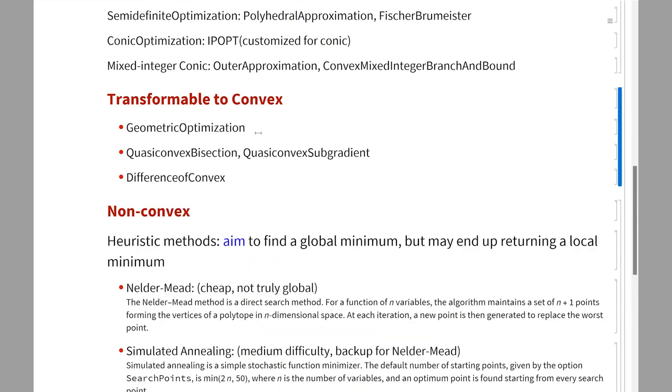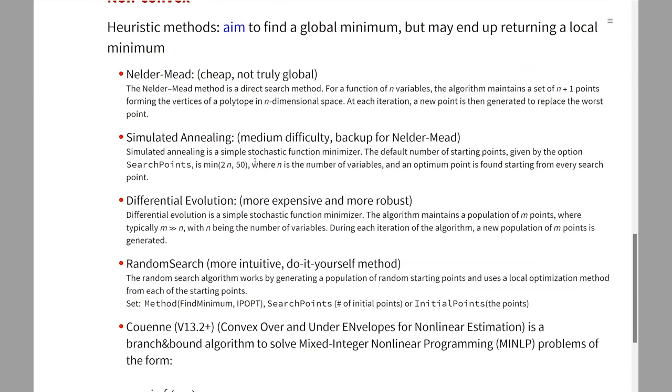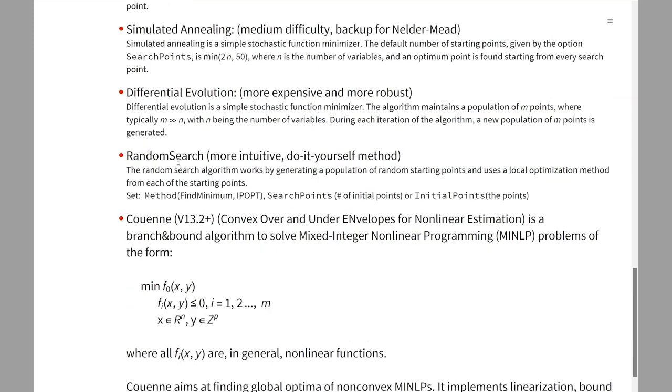There are a few transformable to convex algorithms that we have. For non-convex, these are the four algorithms that we had since almost version 5. The cheapest one that is not truly global and often will return just a local minimum is called NelderMead, but it is very fast. As n becomes very large, this algorithm will become quite fast, so it is in the default method for that reason. We'll be reworking the default method now that we are getting more solvers.